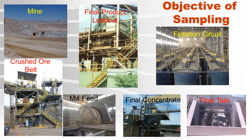Here are some locations where sampling is normally done. At the mine, this is usually done with drill cores, which is not covered in this series. The crushed ore belt, which is before the milling circuit, is a solid sampling system. The final loadout point, or before being shipped, which is also solid sampling.